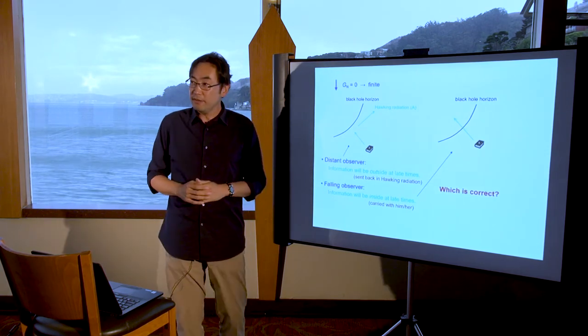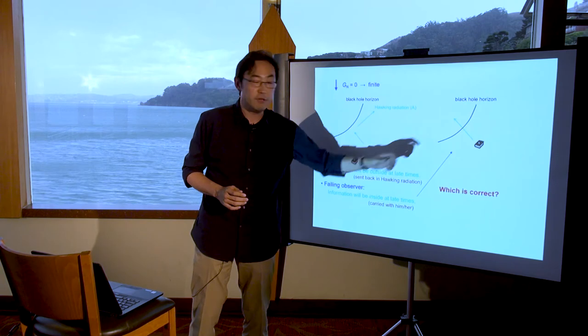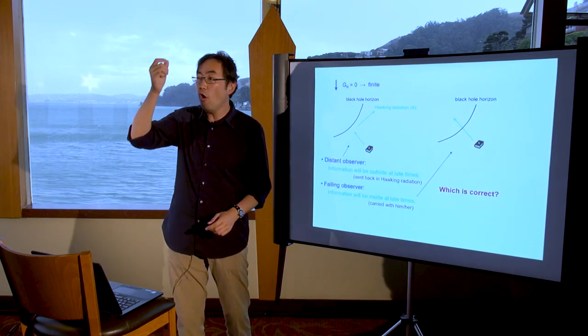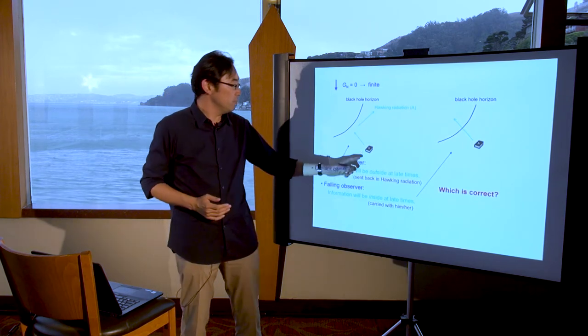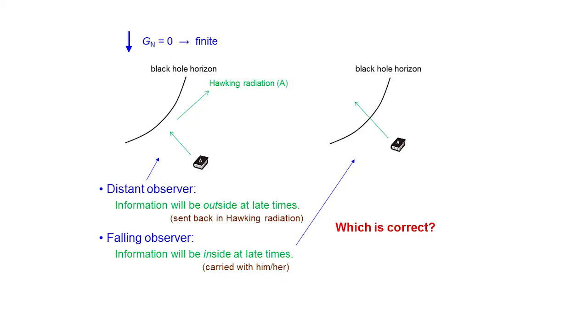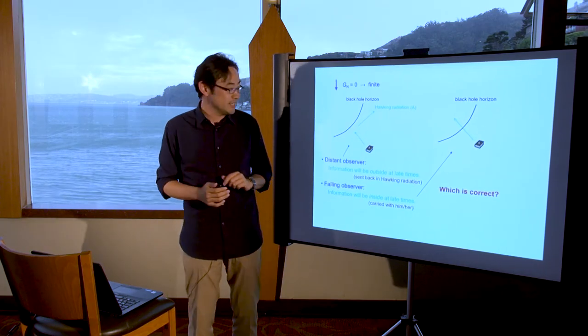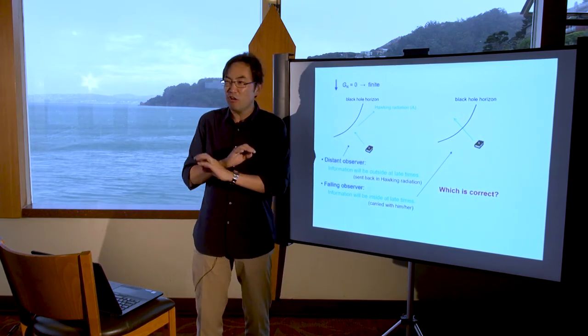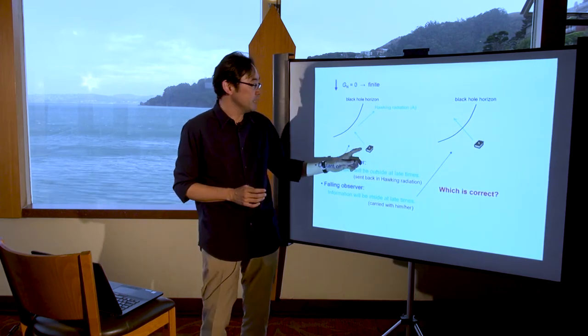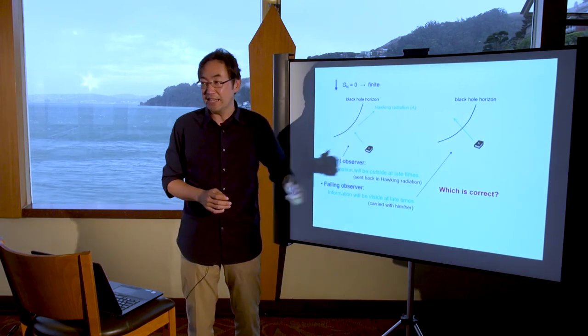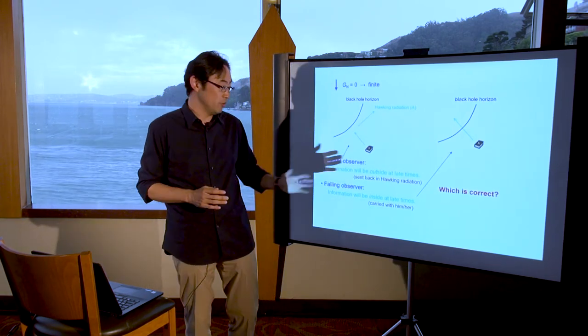But on the other hand, the theory of general relativity tells us that if you're falling with this book, then the whole book will be inside the black hole. And what's going on? You may think that the information of the initial book will be outside in the Hawking radiation, as I explained earlier, or maybe the book is inside because you can fall with the book. But the theorem of quantum mechanics suggests that the same information cannot completely be copied. So the information cannot both be outside and inside at the late time. So what's going on?